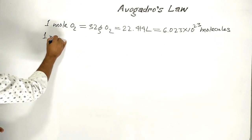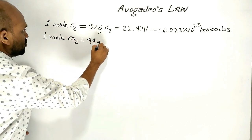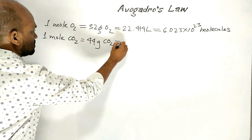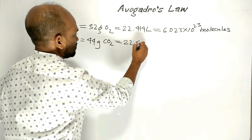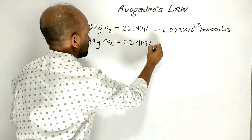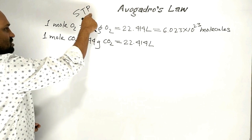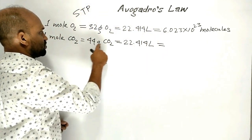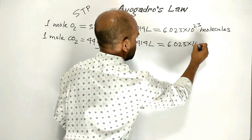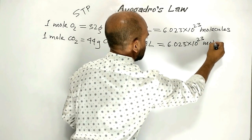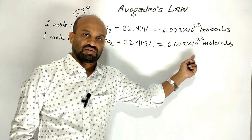One mole of carbon dioxide is equal to 44 grams of carbon dioxide. The volume of 44 grams of carbon dioxide is 22.414 liters at STP — standard temperature and pressure. This volume of carbon dioxide gas contains 6.023 × 10²³ molecules, which is obtained by different experiments.